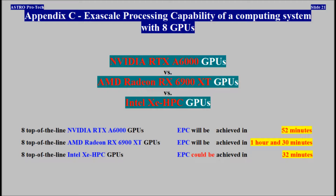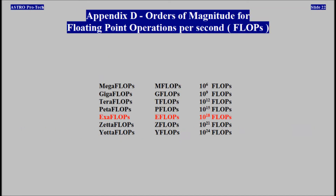Appendix C: Exascale processing capability of a computing system with 8 GPUs. Appendix D: Orders of magnitude for floating point operations per one second.